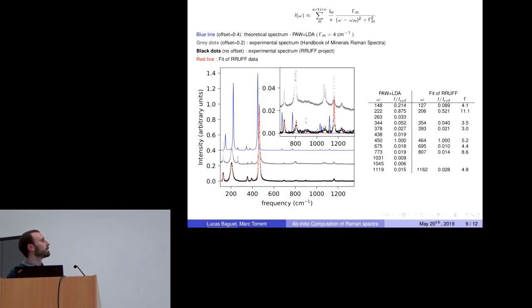Here I present results on alpha quartz. The blue line here is the theoretical spectrum obtained with PAW and LDA. As we do not compute the width, it is arbitrarily fixed to four wavenumbers per centimeter. The gray dots and black dots represent experimental values, and the red line here is the fit of these experimental values. Globally, the agreement is quite good. The worst case is for this peak—the second highest peak is where the biggest difference is between experimental and theoretical values.